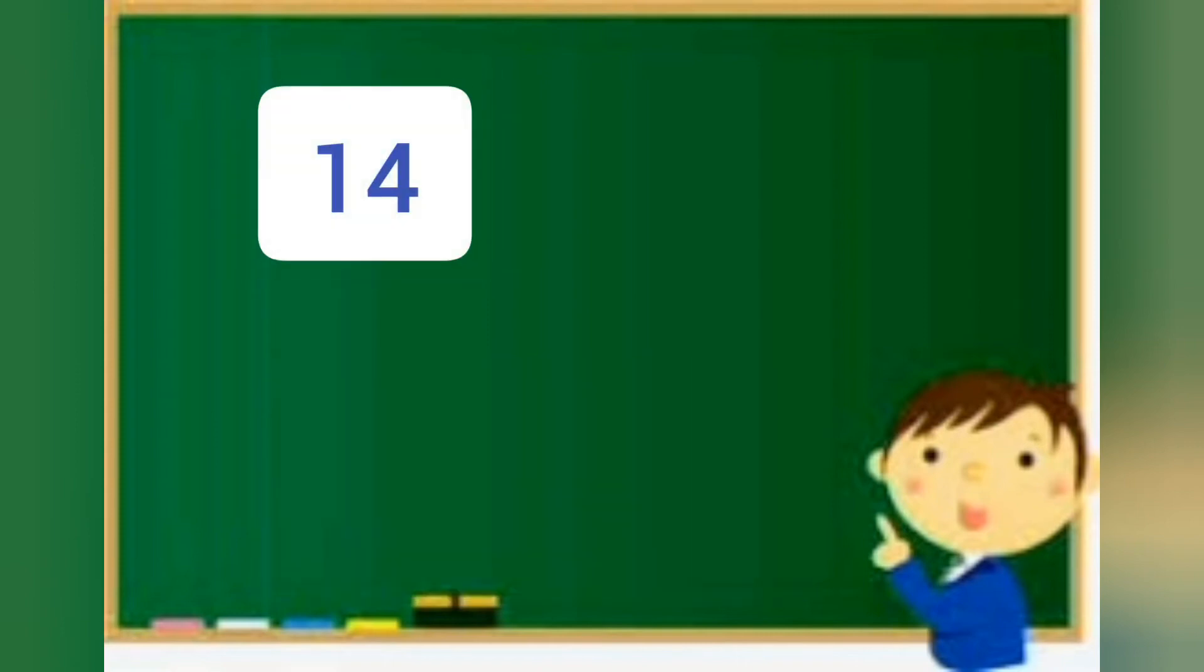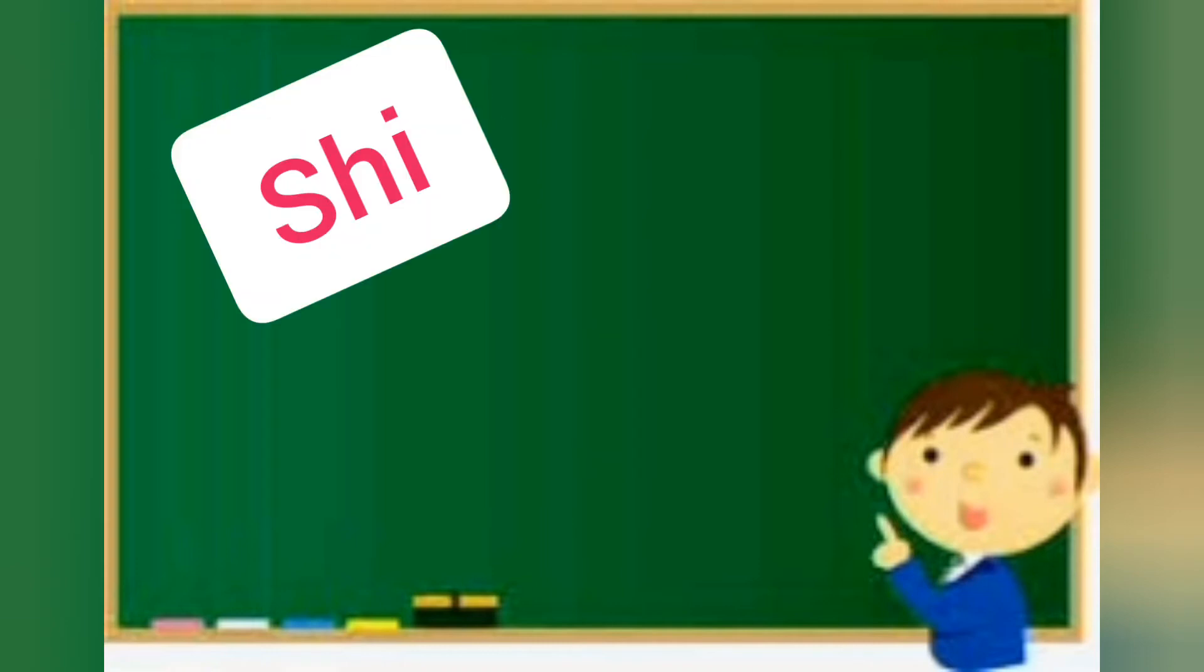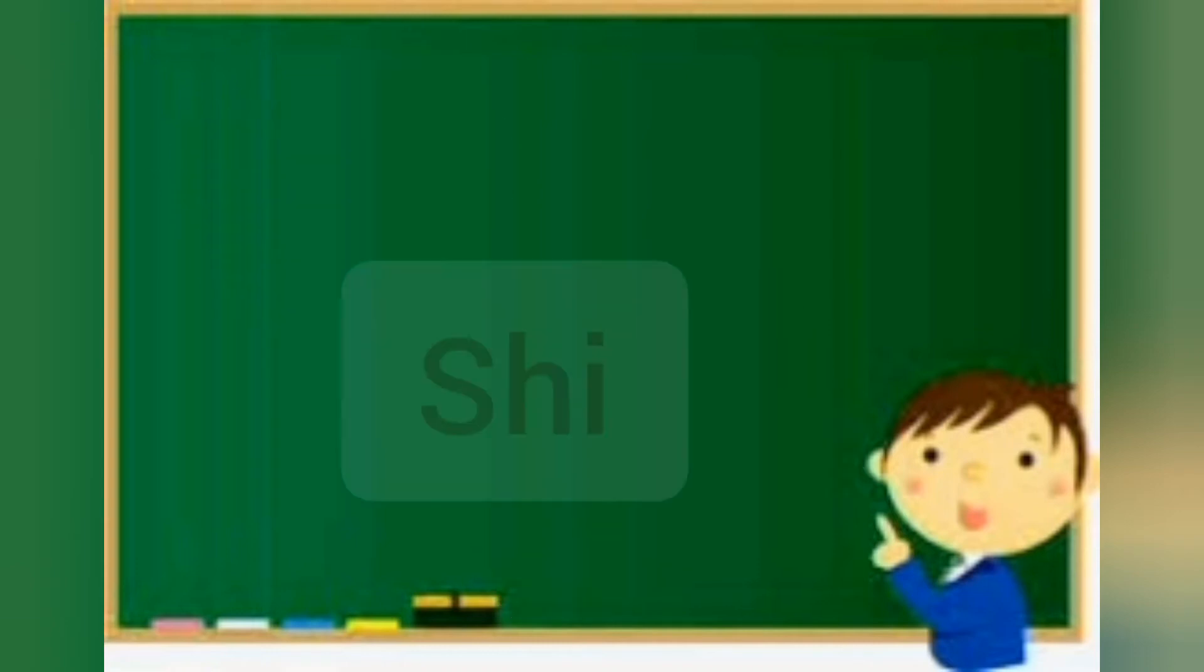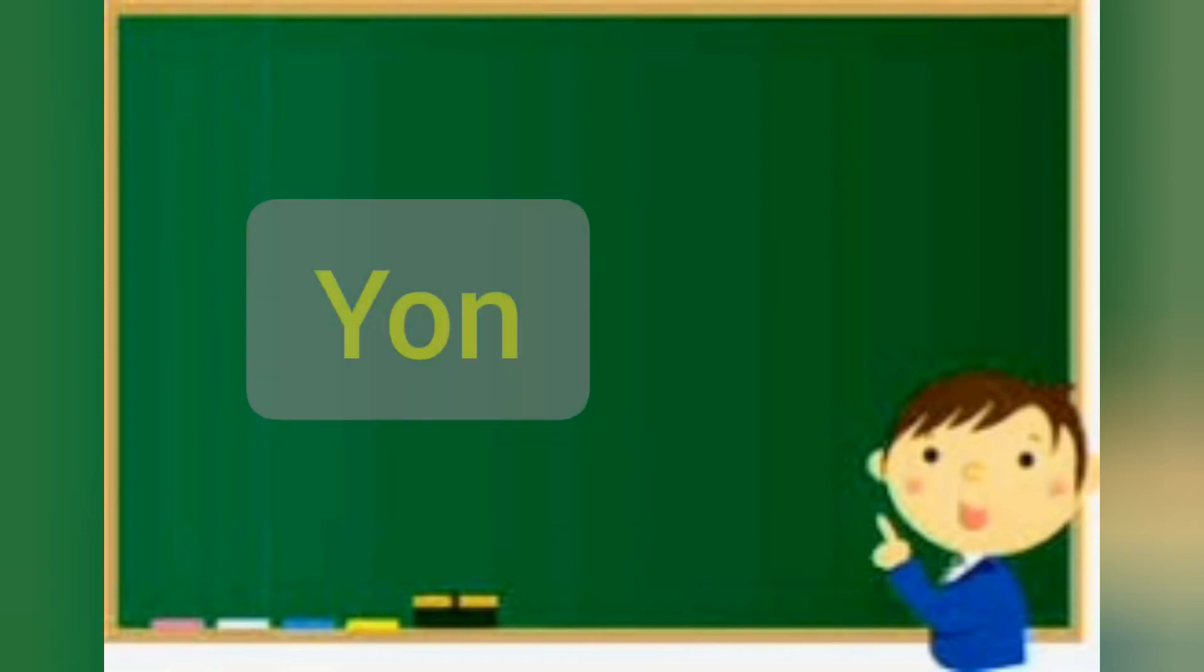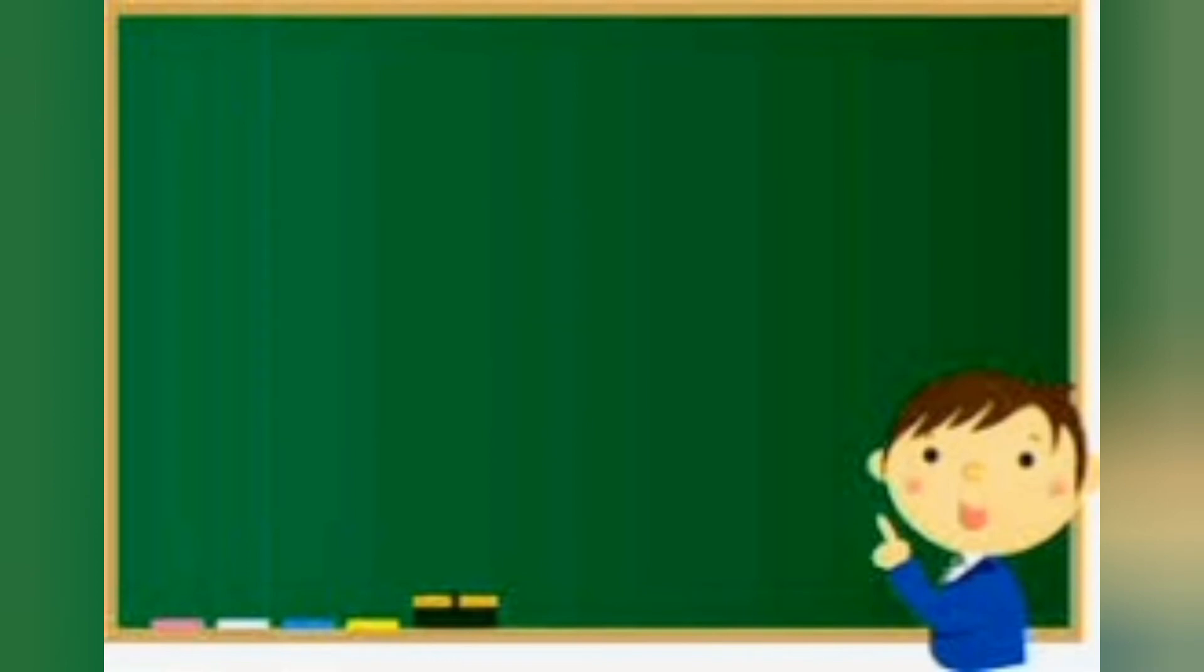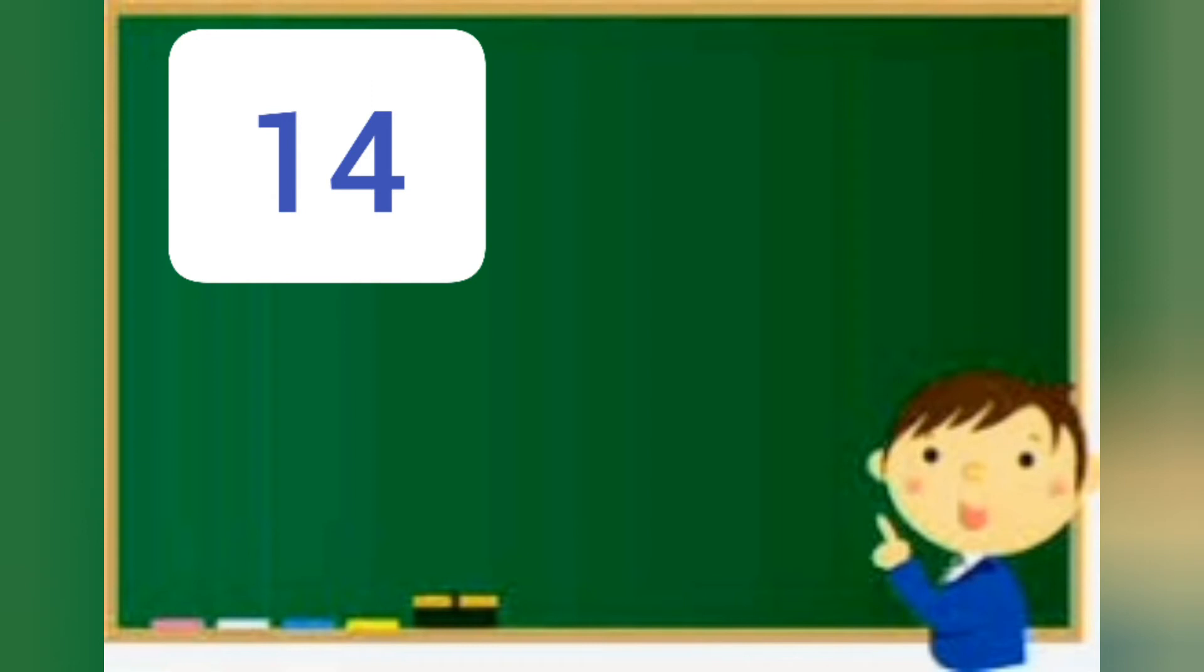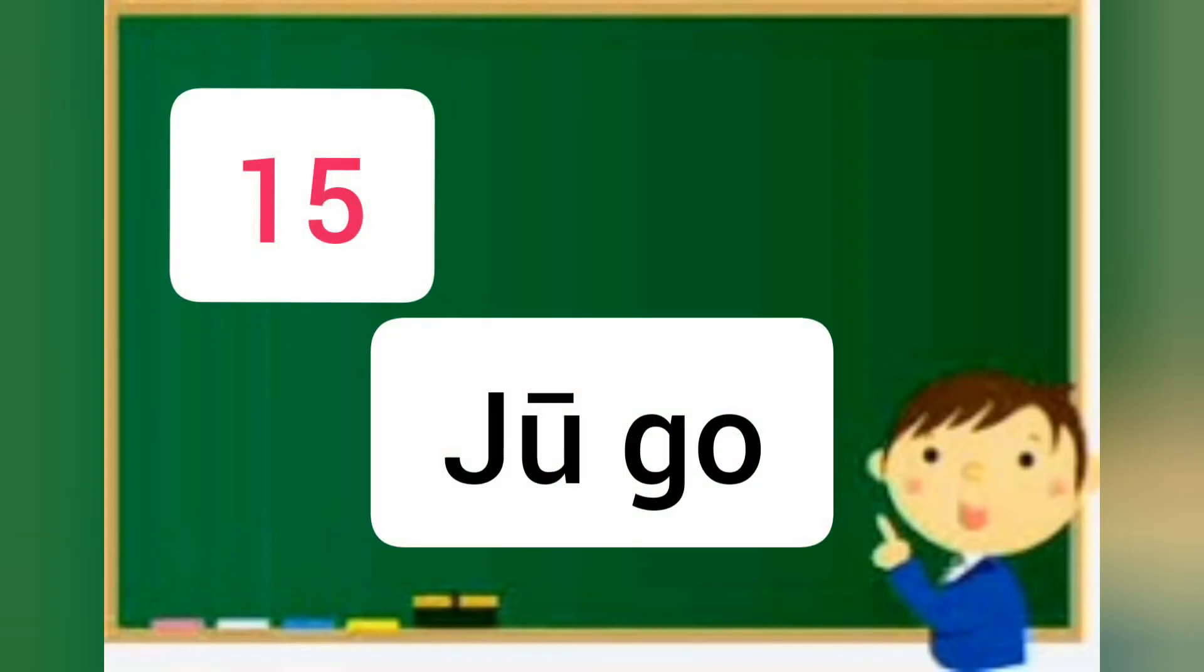Number 14: there are two words for number four, shi and yon. We only use shi when we count number four, but we use yon to count number 14, 24, 34, 40, 44, and so on. To count number 14 in Japanese, we say ju-yon. Ju-yon. Number 15 is ju-go. Ju-go.